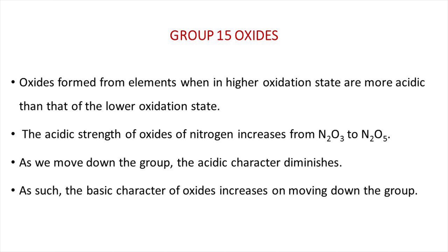The oxide in the higher oxidation state of the element is more acidic than that of the lower oxidation state, and their acidic character decreases down the group. The acidic strength of oxides of nitrogen increases from N2O3 to N2O5. As we move down the group, the acidic character diminishes and the basic character of the oxide increases. For example, the oxides of the type E2O3 of nitrogen and phosphorus are purely acidic, those of arsenic and antimony are amphoteric, and those of bismuth are predominantly basic.